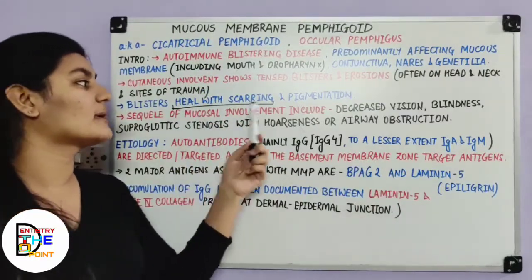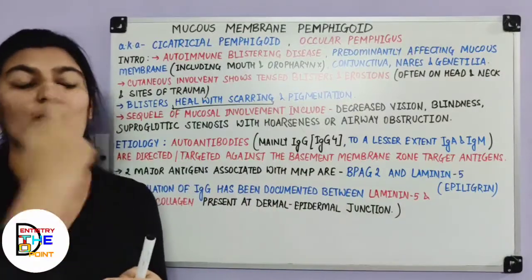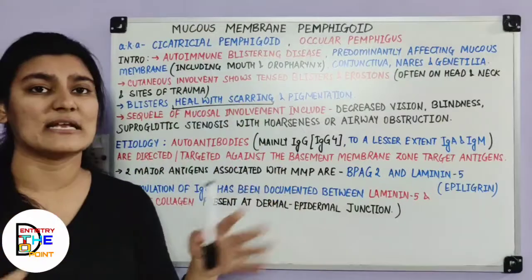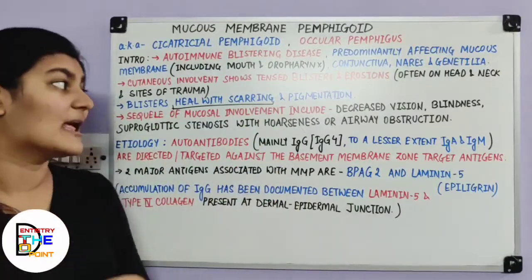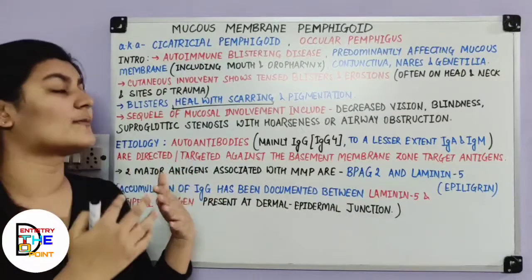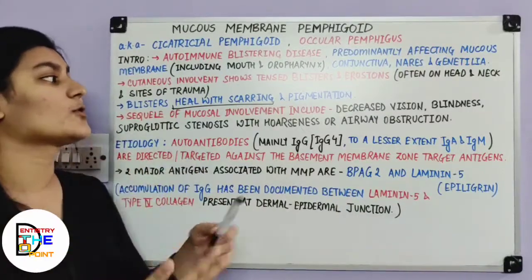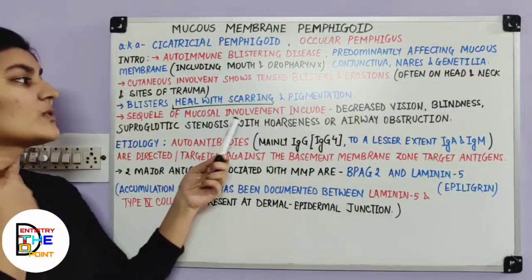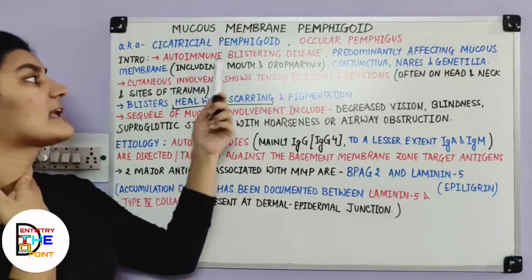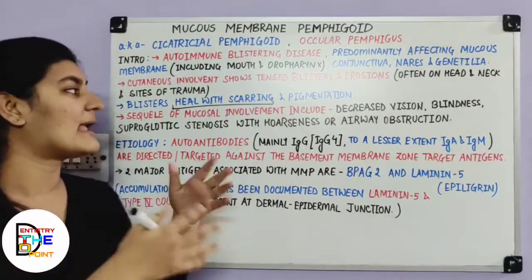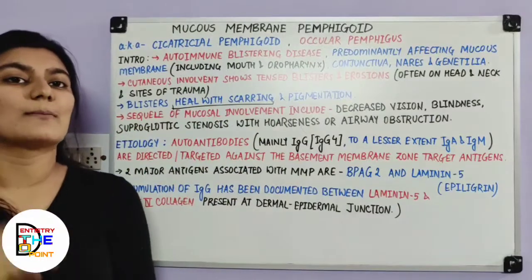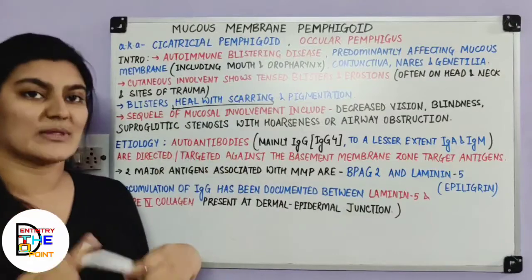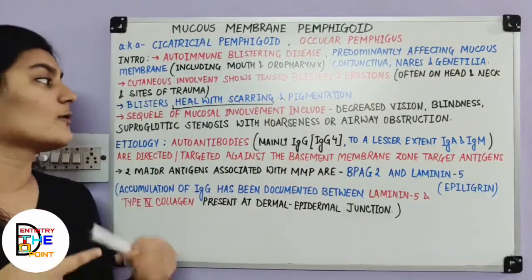The sequelae of mucous membrane involvement include: if the conjunctiva is affected, it is followed by decreased vision and blindness. If the oral cavity and oropharynx are affected, supraglottic stenosis with hoarseness or airway obstruction can occur. These are the sequelae seen following involvement of the mucous membrane.